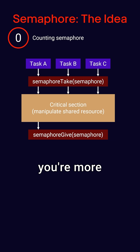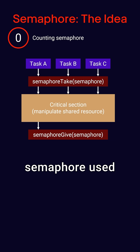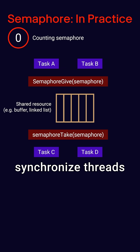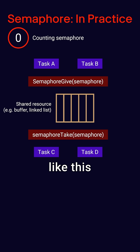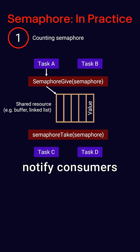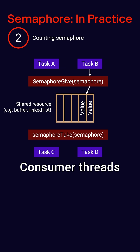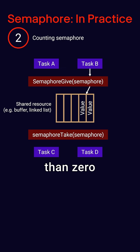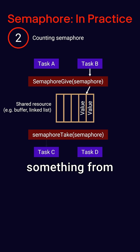In practice, however, you're more likely to see a semaphore used as a way to synchronize threads in a producer-consumer setup like this. Whenever thread A or B writes something to the buffer, they will increment the semaphore by one to notify consumers that something is ready to be read. Consumer threads C and D see that the semaphore is greater than zero and know that they can then read something from the buffer.